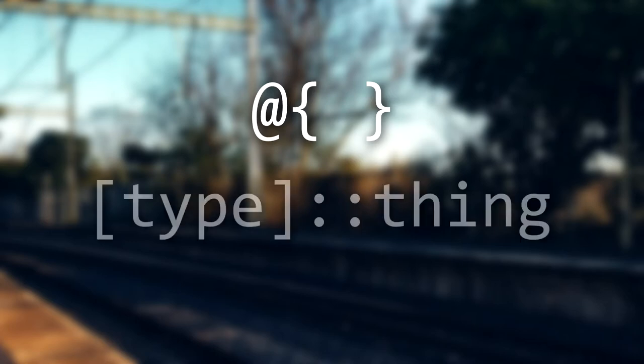The first one being this thing we saw on AddMember back in episode 3, and the second one being this thing we saw in the last episode. These are the missing pieces of the object system, and we're going to look at what they mean. But until then, let's make our first PowerShell script.